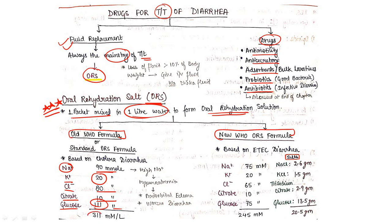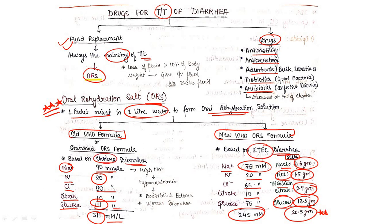This totals 311 millimoles per liter. Based on the new WHO ORS formula, sodium should be 75 millimoles, potassium 20, chloride 65, citrate 10, and glucose 75, totaling 245 millimoles. When we consider salts: NaCl 2.6 grams, KCl 1.5 grams, trisodium citrate 2.9 grams, and glucose 13.5 grams, totaling 20.5 grams. This is based on ETEC diarrhea, and old formula is based on cholera diarrhea.